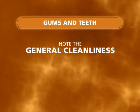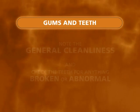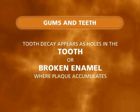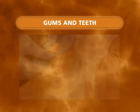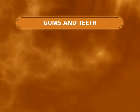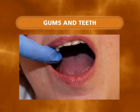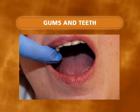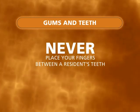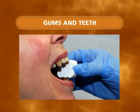When looking at the teeth, note the general cleanliness and check the teeth for anything broken or abnormal. Tooth decay appears as a hole in the tooth or broken enamel where plaque easily accumulates. If the resident wears dentures or partial plates, be sure to check them for debris or broken pieces. Your gloved index finger can help you feel for any lumps, sharp spots or painful areas along the ridges, teeth and dentures. It is important that you never place your fingers between a resident's teeth. The teeth can be propped by placing the handle of a toothbrush or a mouth prop between the teeth.